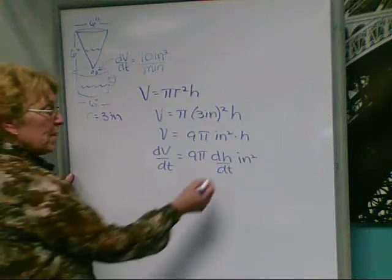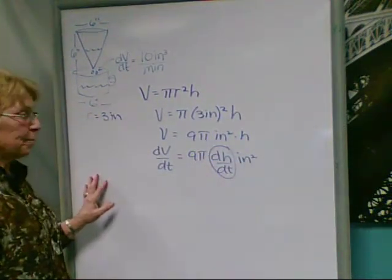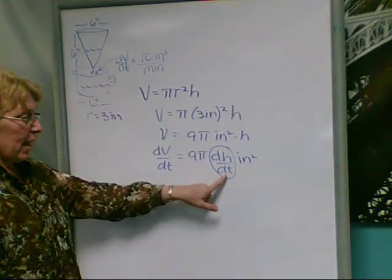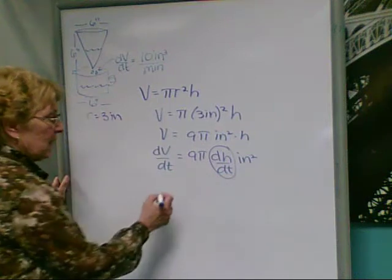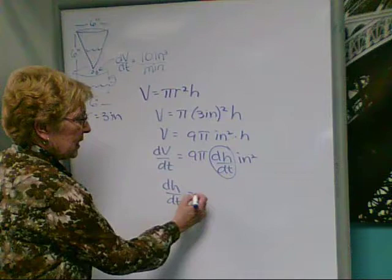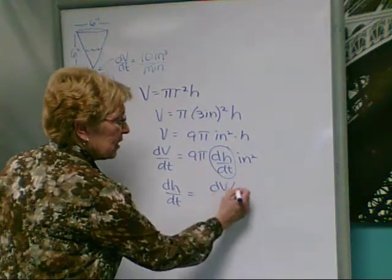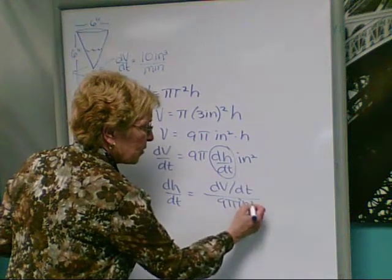And we're going to solve for this. This is what we need to know. So we're going to isolate that by dividing these pieces out. So dh dt is equal to dv dt divided by 9 pi inches squared.